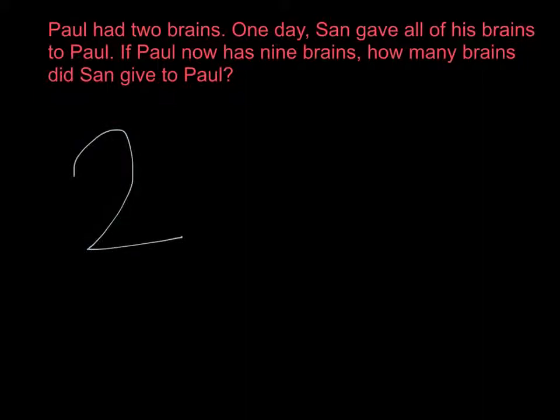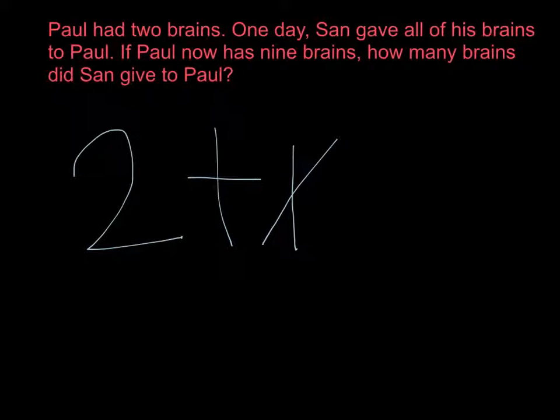To solve this problem, first you will need to write an equation. In this problem, the two brains equals the two. All of Sam's brains is the variable — since Sam gave all of his brains, it's plus a number, which we will call x.